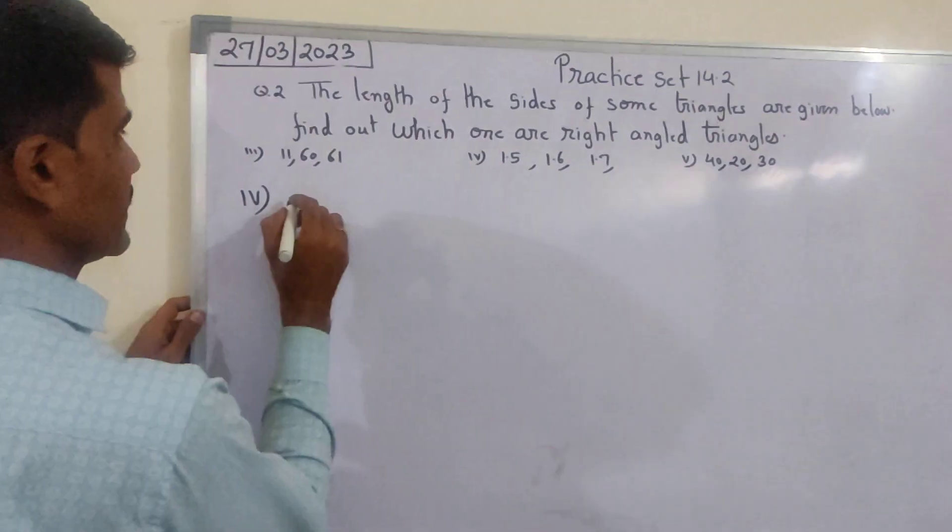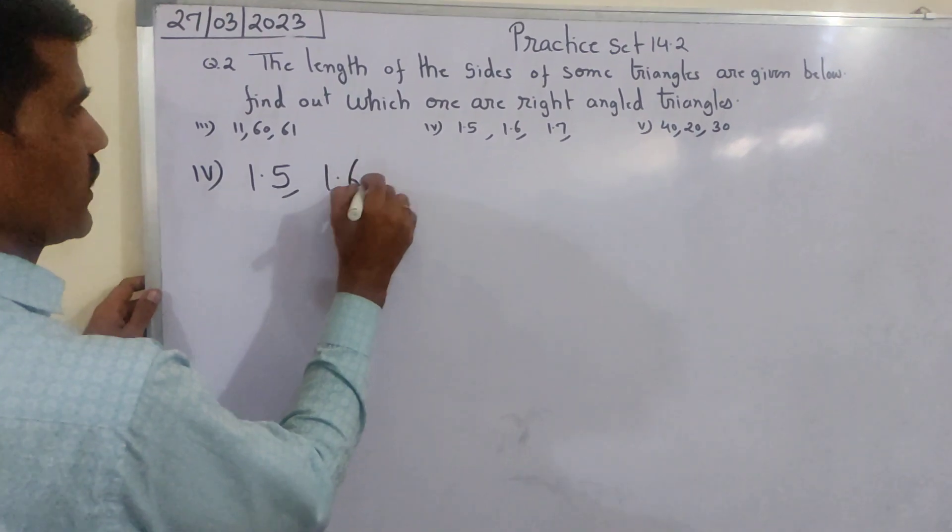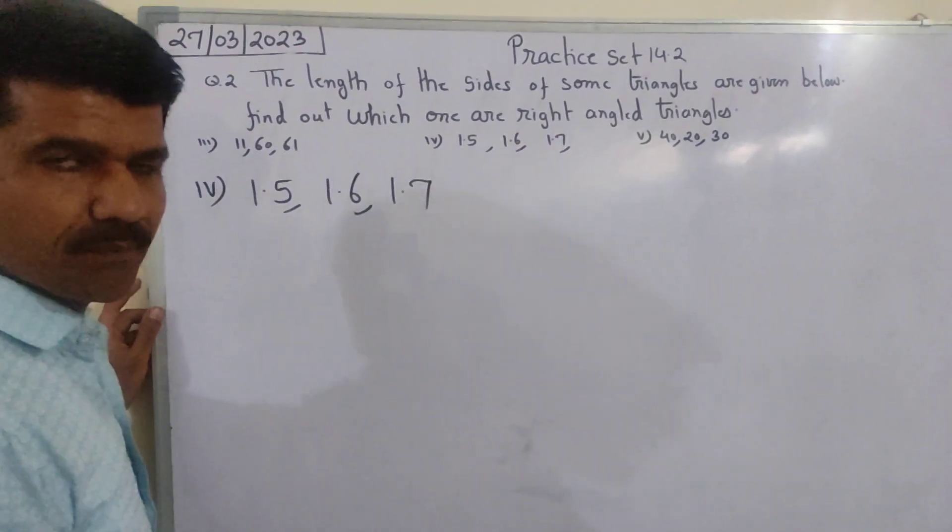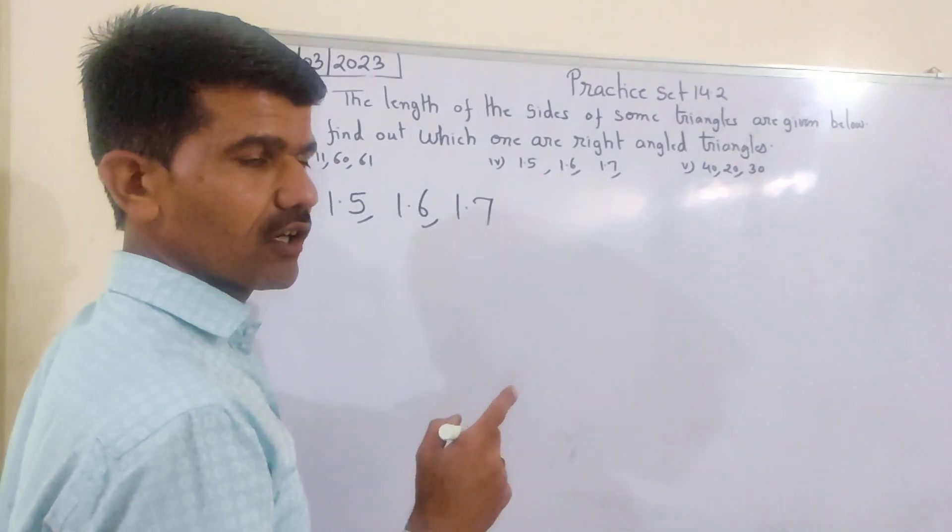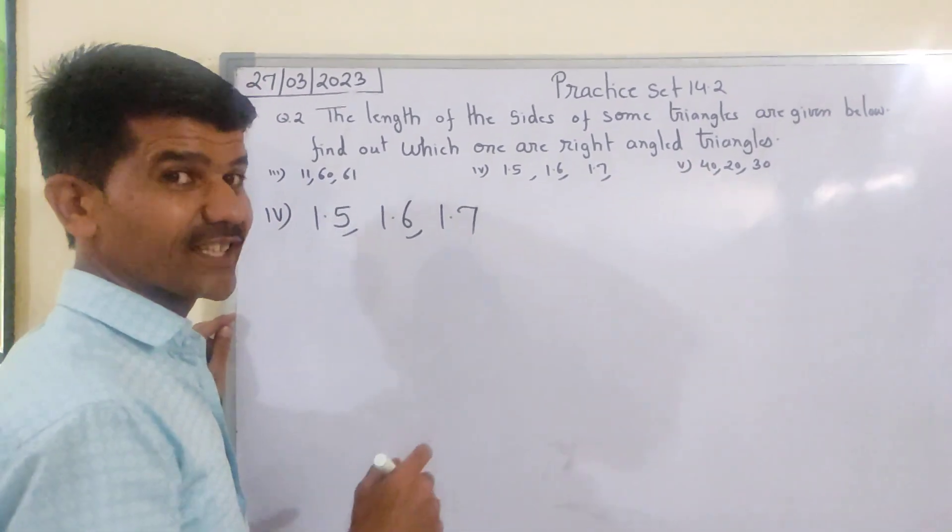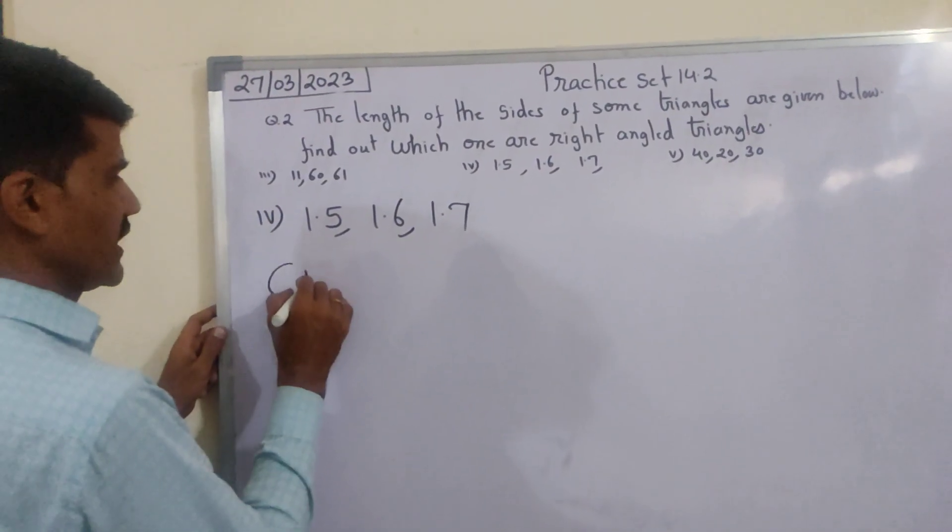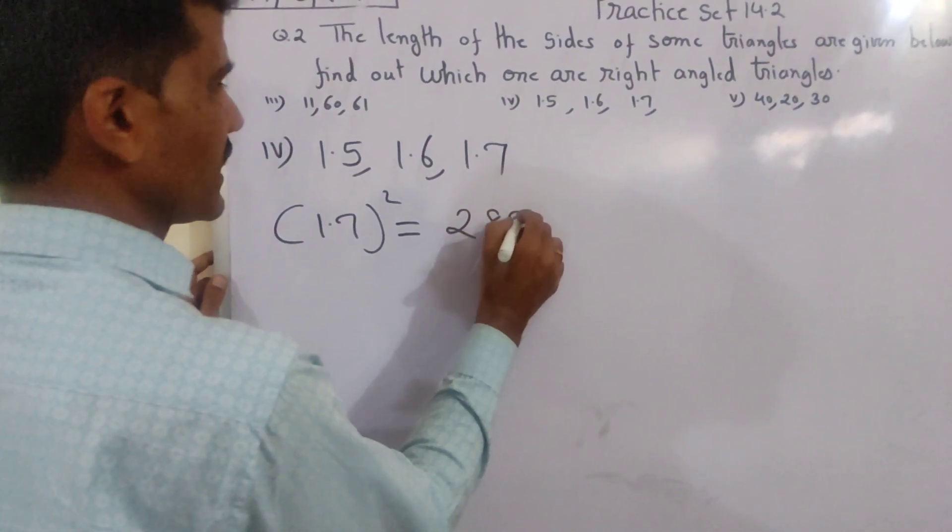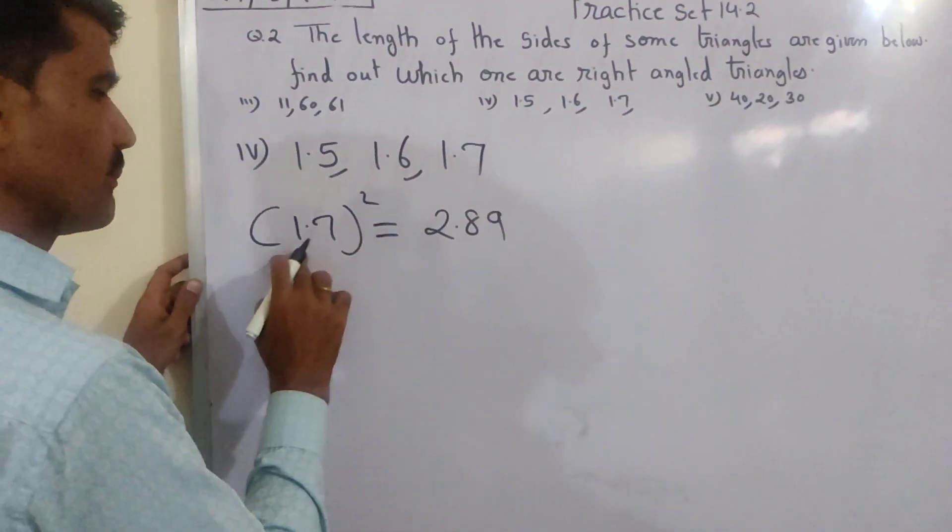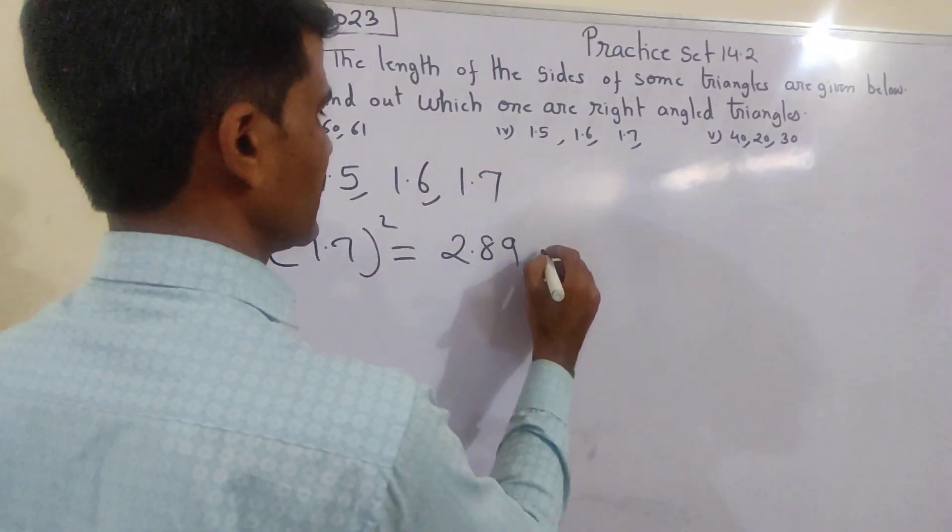4th one, kya diya hai: 1.5, 1.6, 1.7 are the sides of a right angle triangle or not. Tarika - use Pythagorean triplets ka concept hai. Jo bada number hai 1.7, uska square 17 ka square 289. 2 digit ke baad point, kyunki 1.7 into 1.7, 2 digit ke baad point - 2.89. Isko diya 1 number.